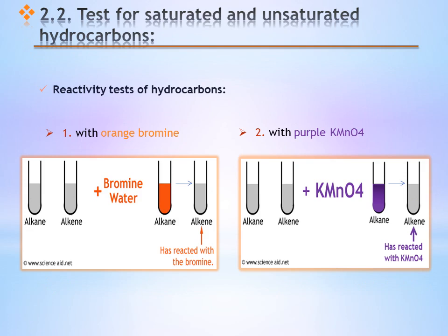How can we test whether a hydrocarbon is saturated or unsaturated? We can use either orange bromine or iodine solution, or a purple potassium permanganate solution. If it is an alkane, the bromine, iodine, and permanganate color does not disappear — the color will remain. However, if it is an alkene or alkyne, there will be decoloration due to a chemical reaction. Therefore, when there is decoloration, we have an unsaturated hydrocarbon, and if the color remains, it is a saturated hydrocarbon.